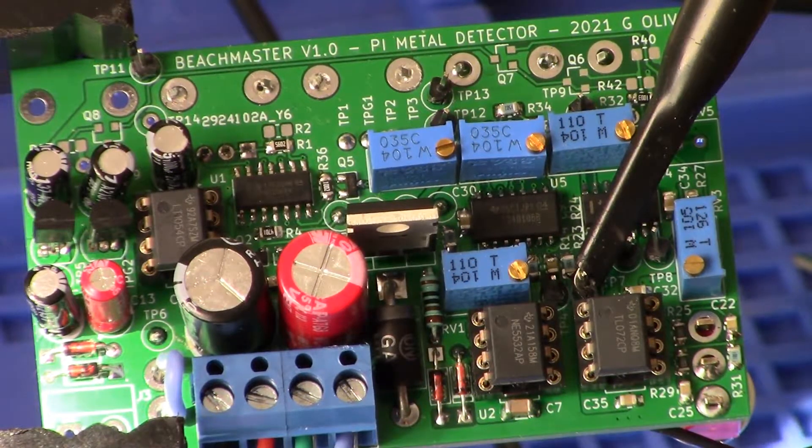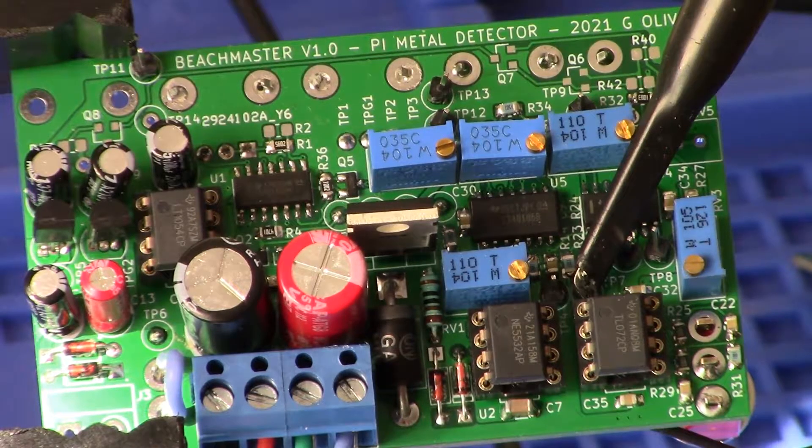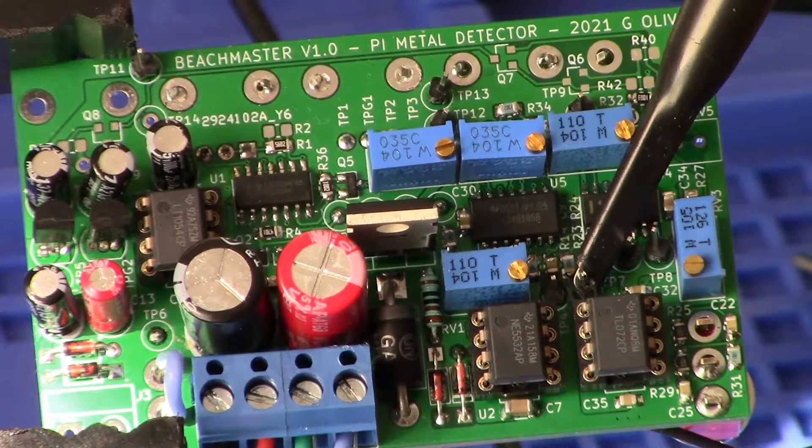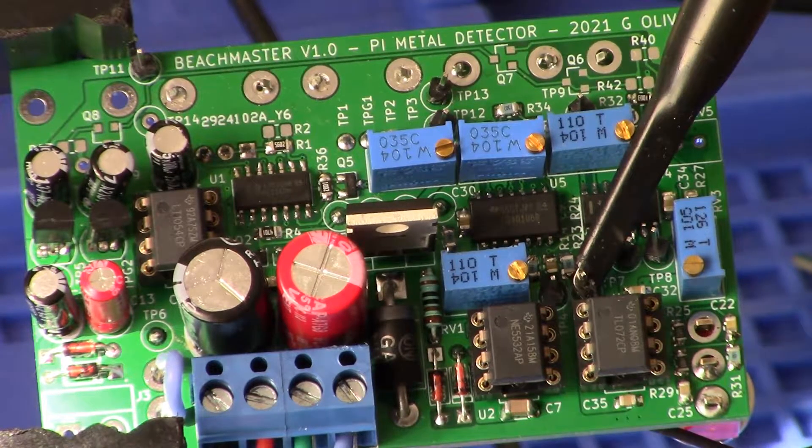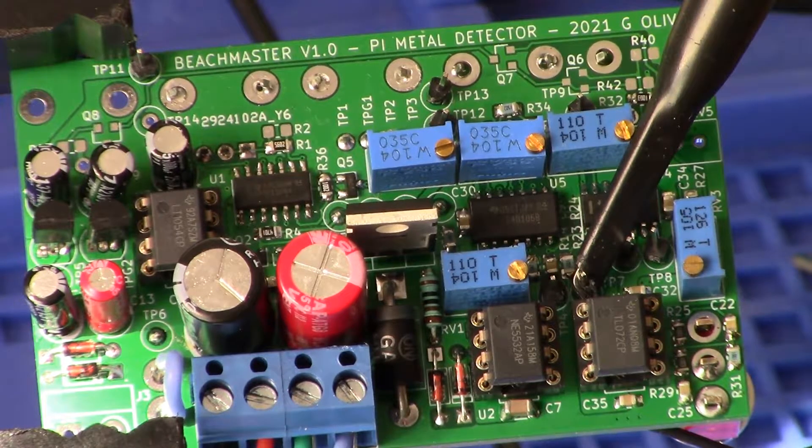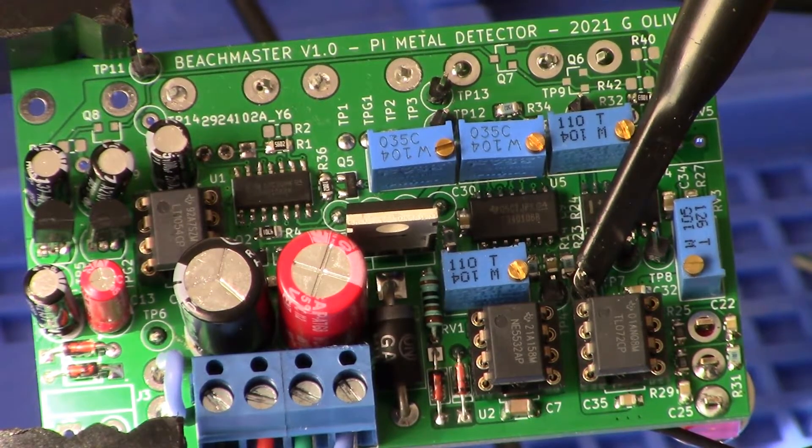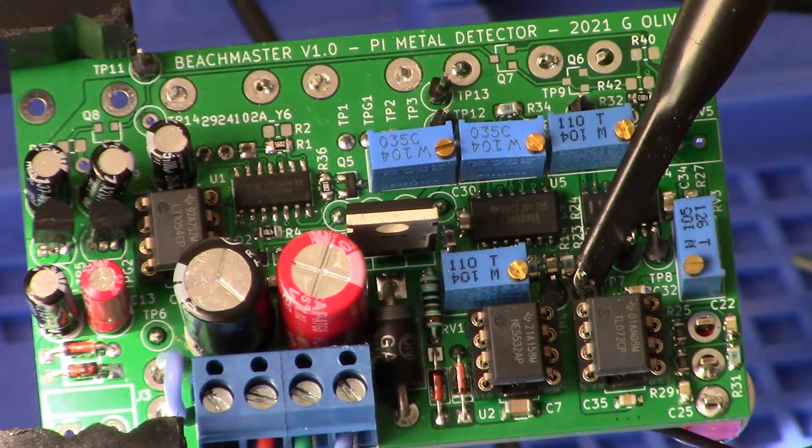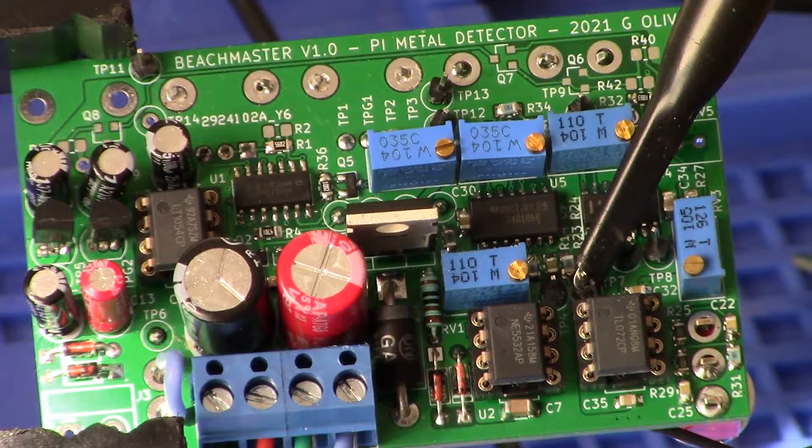All right guys, welcome back. Beachmaster pulse induction metal detector build. We are doing sample gates and integrators this morning. You can see I have the printed circuit board all set up, I have my oscilloscope probe attached. We are on test point number seven. We're going to be monitoring DC voltage as I present a coin to our mono coil, and we're going to be looking for a rise in DC voltage.